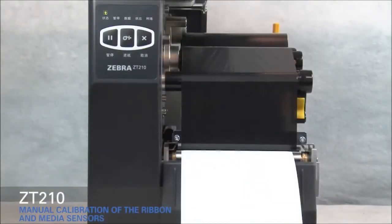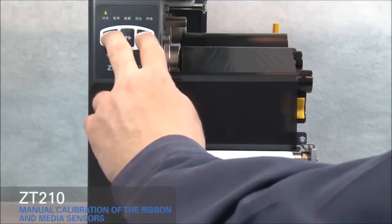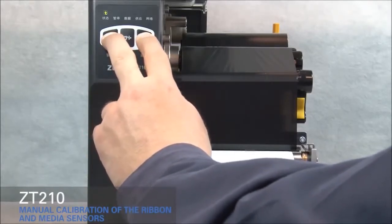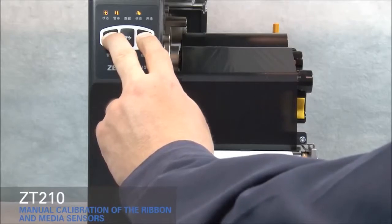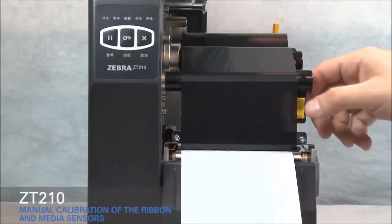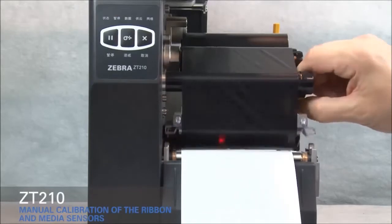Press and hold pause and cancel for two seconds. The status light and supplies light flash yellow once. The pause light blinks yellow. Rotate the gold printhead lever up to open the printhead.